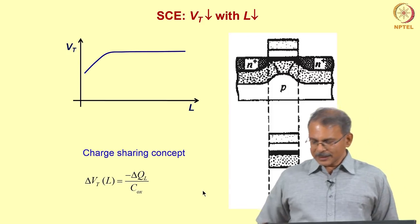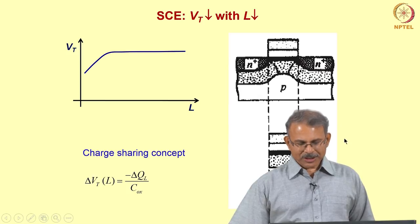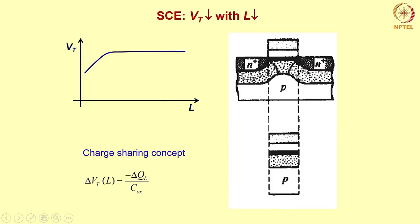The short channel effect — decrease in Vt for reduced L — is explained by the charge sharing concept. In a short channel device, the source and drain depletion regions encroach under the gate, so part of the depletion charge is controlled by the source and drain junctions rather than the gate. The gate-controlled charge decreases, reducing the threshold voltage.